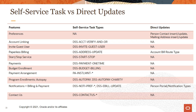Paperless billing and billing and payment related notifications generate self-service tasks and direct updates. When customers enroll in paperless billing, their bill route type is immediately changed, and when modifying preferences for billing and payment related notifications, those subscription preferences are also immediately updated on the account.